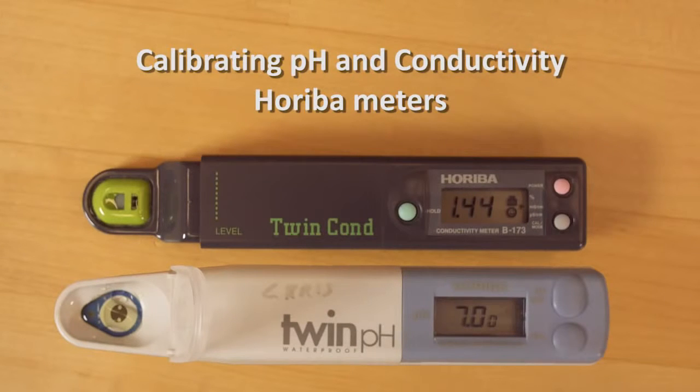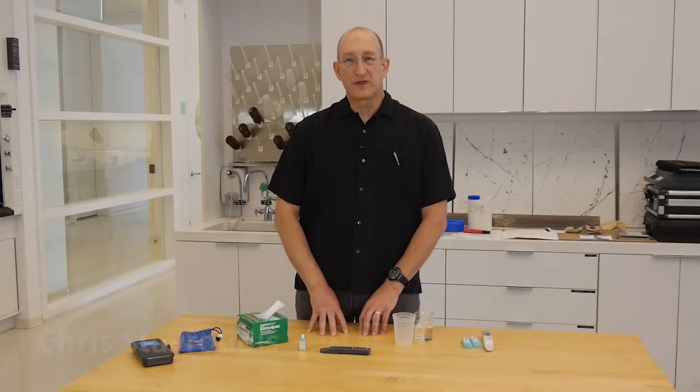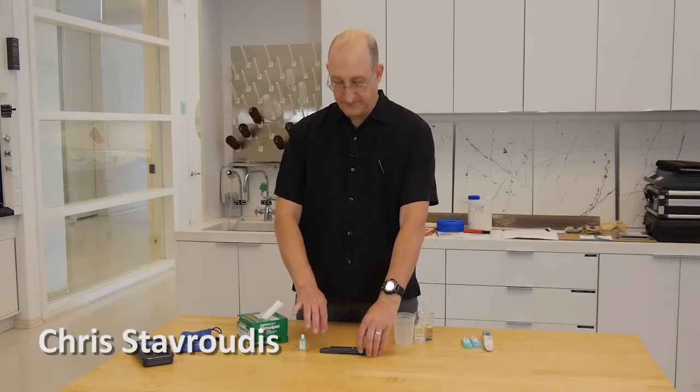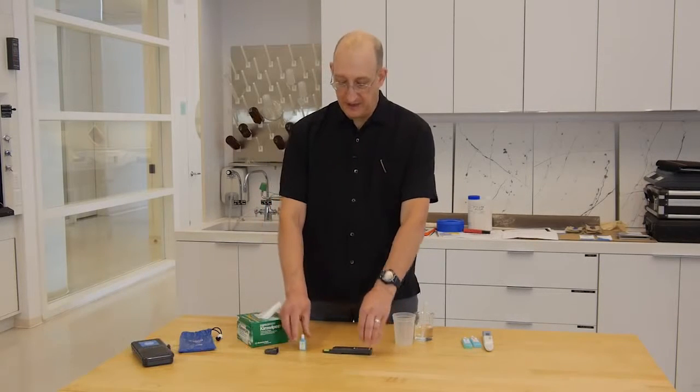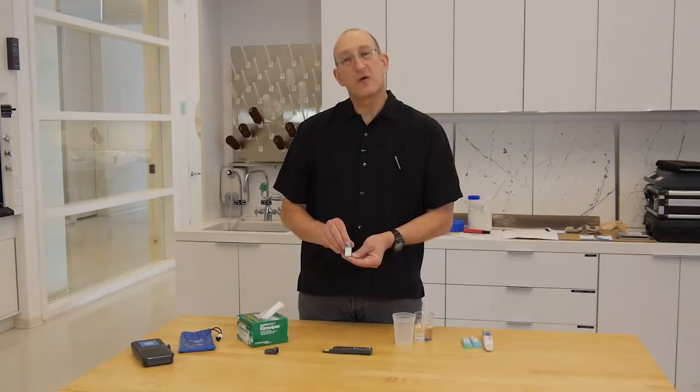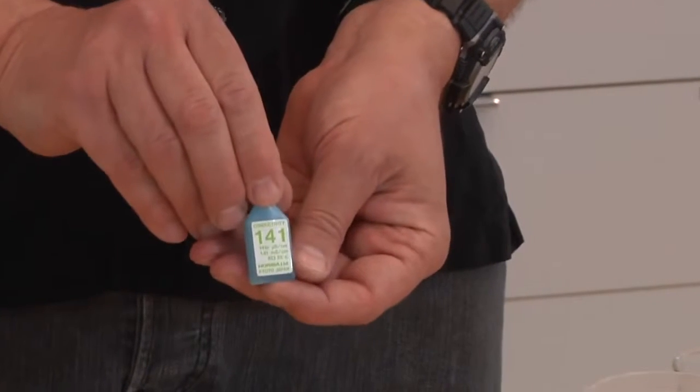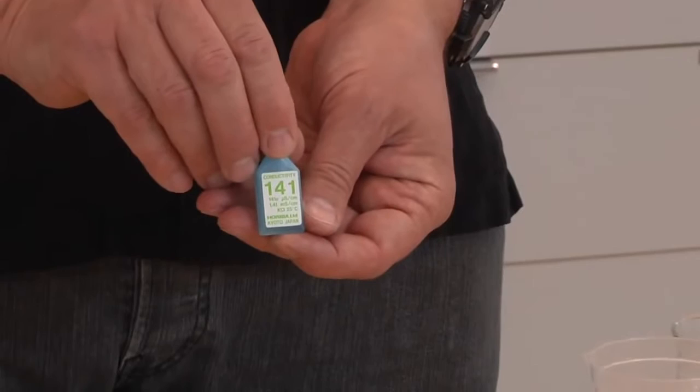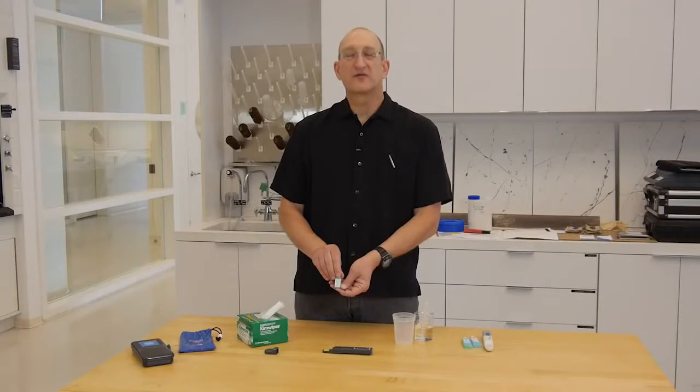To calibrate the Horiba conductivity meter, we want to start with turning the meter on, removing the protective cap, and we'll use a 141 calibration solution, which is 1.41 millisiemens per centimeter, or 1,410 microsiemens per centimeter.